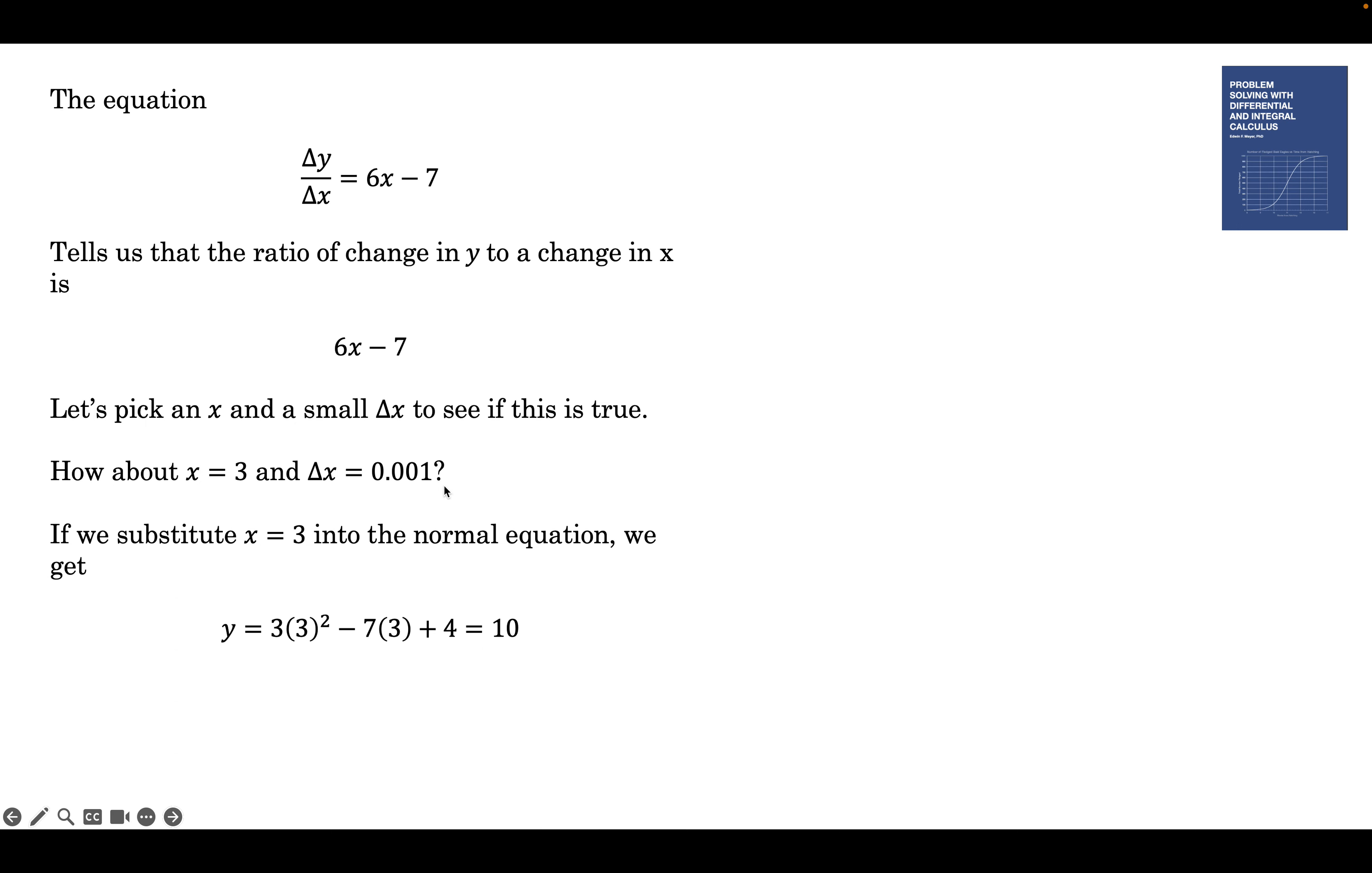If we stick in 3.001, we're going to get a little bit different answer. It's 10.0011. So the difference is 0.0011. And our difference expression is 6x minus 7. So we can check if this is true. Δy, the change in y is 0.0011. We got that because we had a 10.0011 and a 10 for y. The change in x was 0.001. And if we stick in 3 for x, we get 11. And 0.0011 divided by 0.001 is 11.